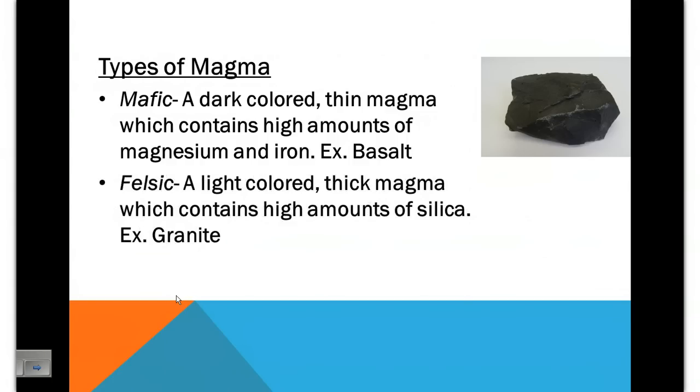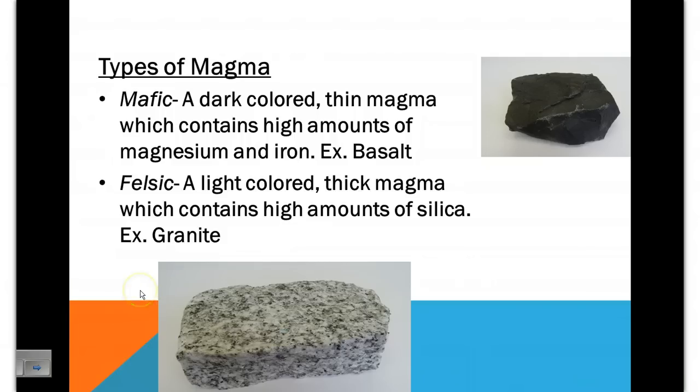Felsic magma is much lighter in color, lower in density, and it's considered felsic in its composition. And it's rich in silicon and aluminum. And it would create a granite that looks like that.